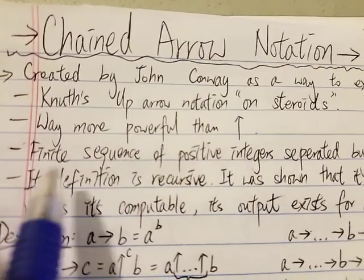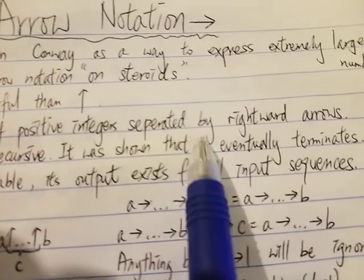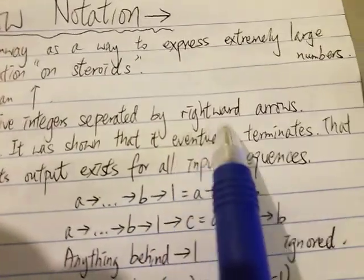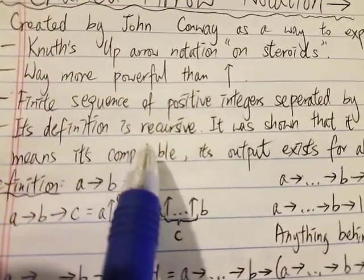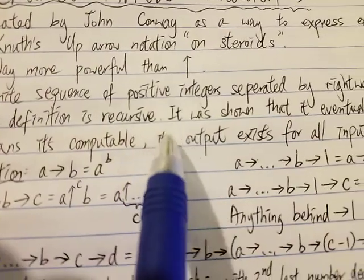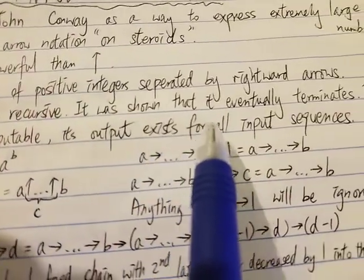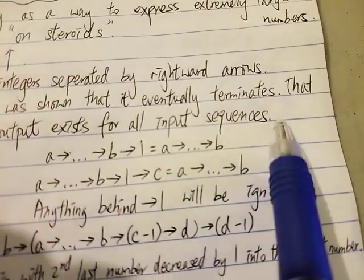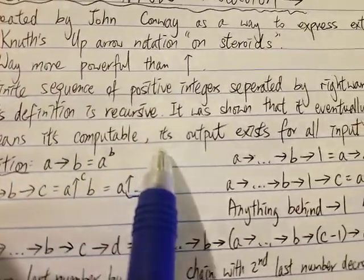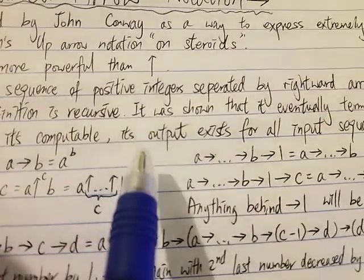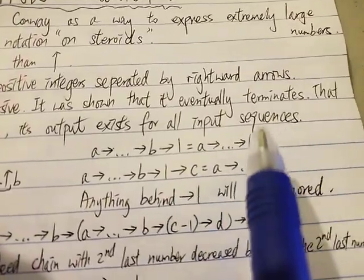Basically, it's a finite sequence of positive integers separated by right-ward arrows. This definition is recursive. However, it was shown that it eventually terminates — that means it's computable, and the output exists for all input sequences.